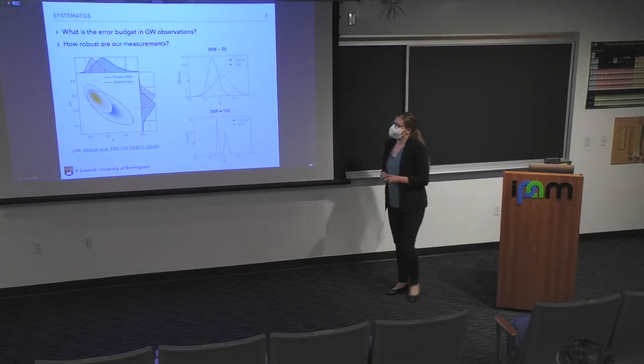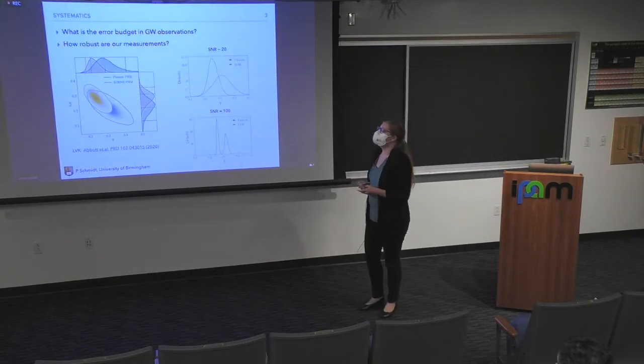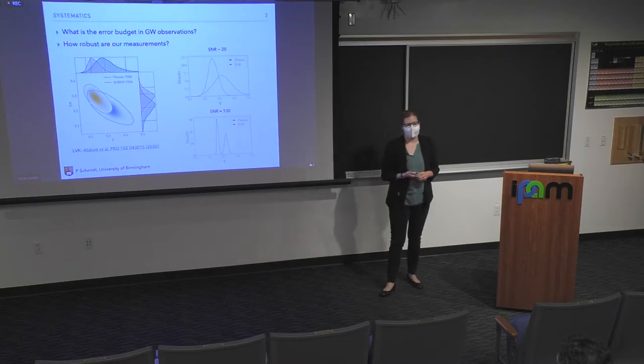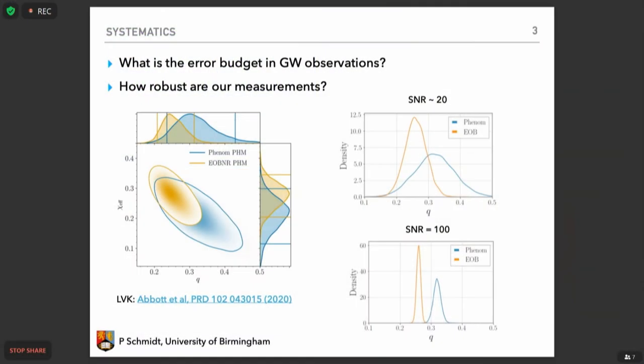So how do these impact our inferences about the source properties? So overall, I think with every experiment, and that's also true for gravitational wave observations, we ask, what is the error budget? And how do we actually assess the error budget? And how do we mitigate impacts of errors on our inferences?